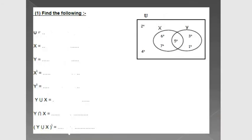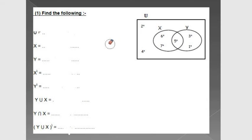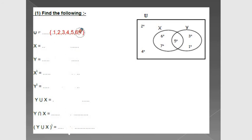Let's take an example. If I have this universal set, what are the elements of the universal set? The universal set means all elements. I will write all elements found in the universal set, X, and Y: 1, 2, 3, 4, 5, and 6.